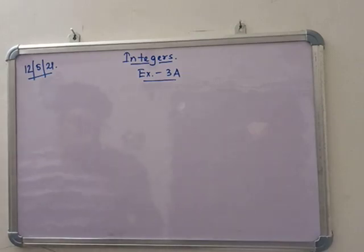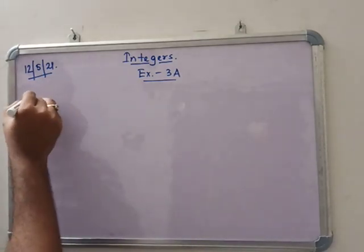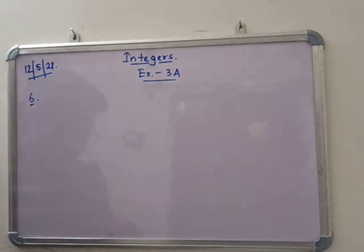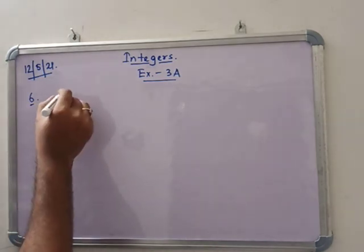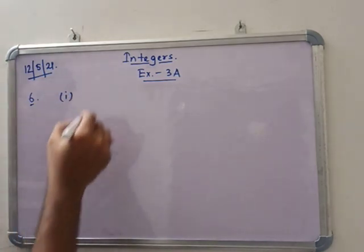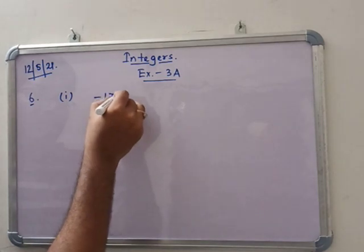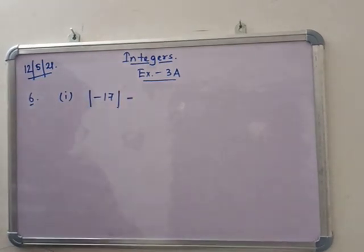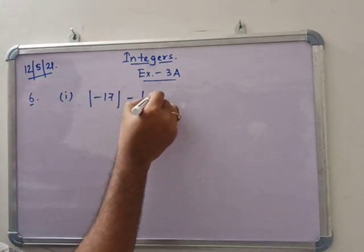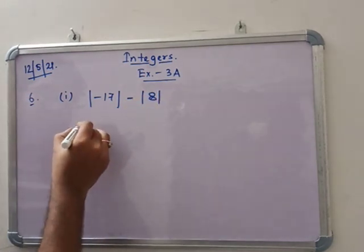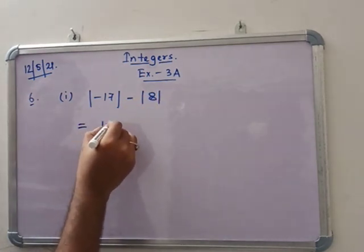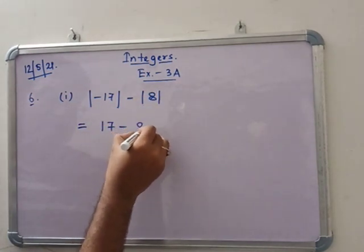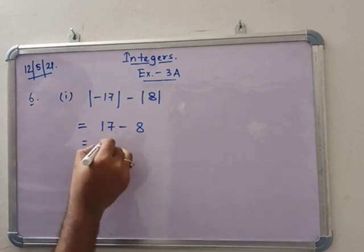Today we are starting from number 6, because this is exercise 3. In number 1, we have minus 17 absolute value minus minus 8 absolute value. So minus 17 absolute value is 17 and minus 8 absolute value is 8. So this is 9.